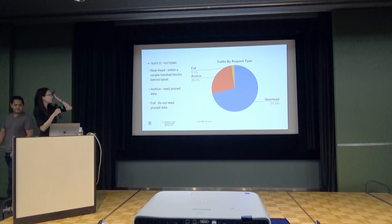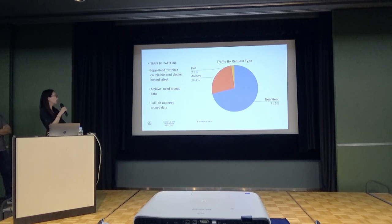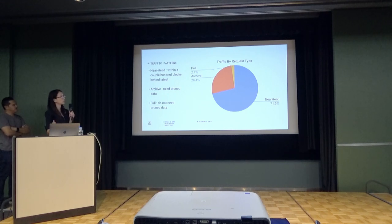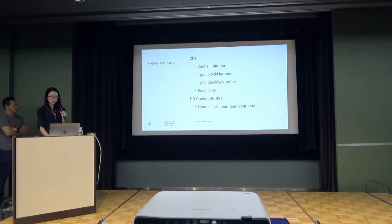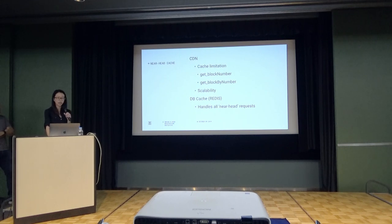I've categorized our traffic into three different types: near-head, archive, and pull. Near-head is any request within a couple hundred blocks behind the head. Archive is requests that require proven historical data. Pull is requests that do not require proven data. The majority of traffic we get is near-head — it's fairly consistent — whereas archive data could fluctuate anywhere between 26% to less than 1%, depending on what our users are doing at a given point in time. So the first thing we did was cache our near-head data using a CDN. It worked really well but came with limitations — we could only cache certain methods like get_block_by_number and get_block_number, and it wasn't very scalable. So we made a decision to store our near-head data in Redis DB, which was much more scalable and allowed us to store all our near-head data.